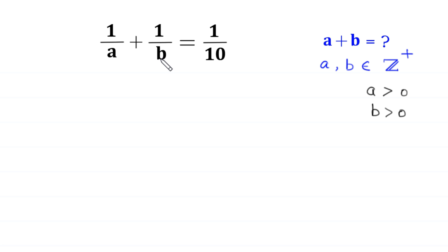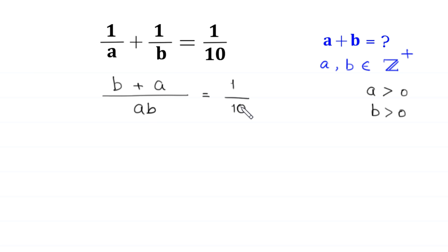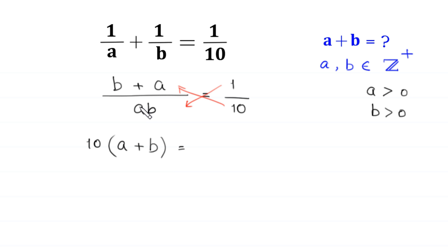We take the LCM of a and b. The LCM of a and b is ab. When we divide ab by a we get b, and when we divide ab by b we get a. So the equation becomes (b plus a) over ab is equal to 1 over 10. Using cross multiplication, 10 times (a plus b) equals ab, giving us 10a plus 10b equals ab.